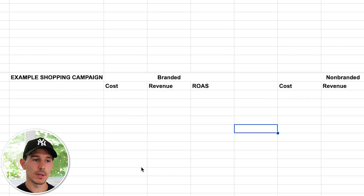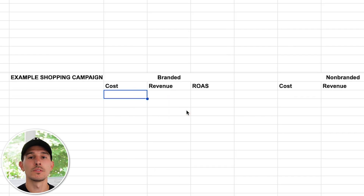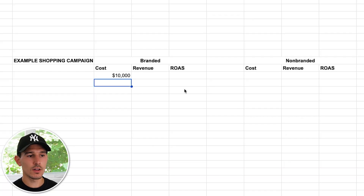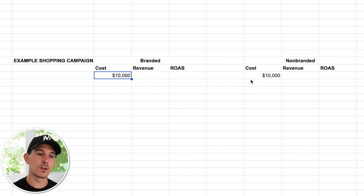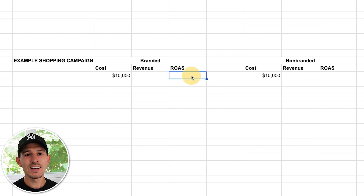We're going to create an example shopping campaign and assume a 50/50 split. We're going to safely assume we're spending a total of $20,000 for the month. In that case, we split the $20,000 cost right down the middle: $10,000 on branded search and $10,000 on non-branded search. It doesn't matter if it's $100 and $100 — it's the fact that we're breaking these out evenly.